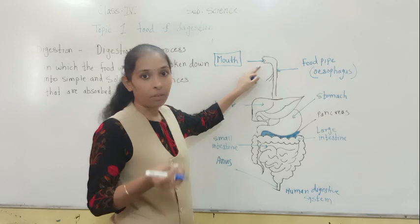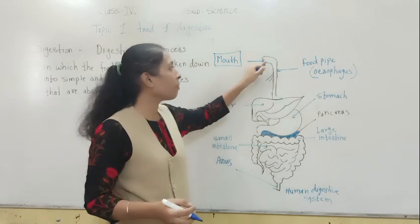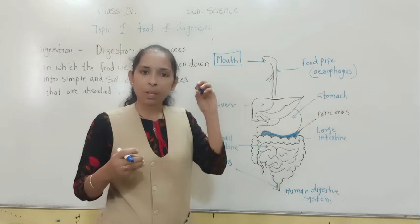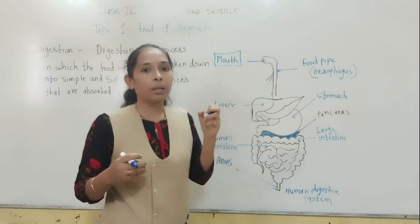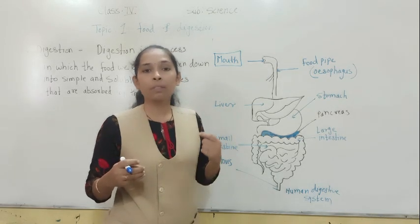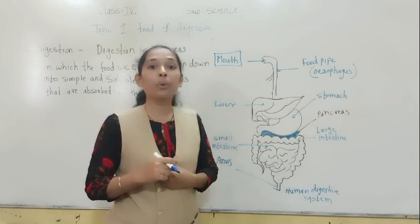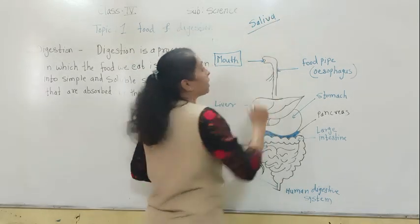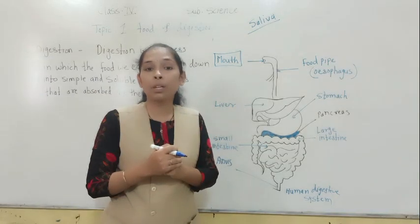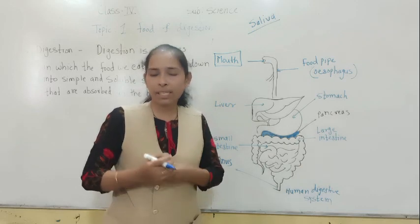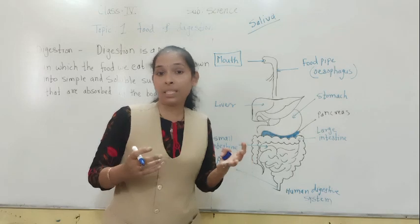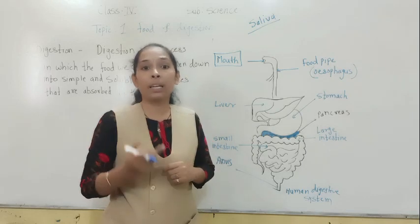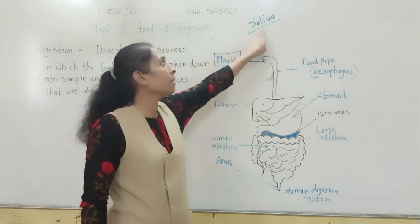Whatever food we have, we put it into our mouth and start to chew it. With the help of the teeth, we chew and grind the food into small pieces. At the same time, the food mixes into the saliva. Now what is saliva? When your favourite food comes in front of you — like tamarind, mango, or amla — your mouth starts watering. That liquid in our mouth is nothing but saliva.